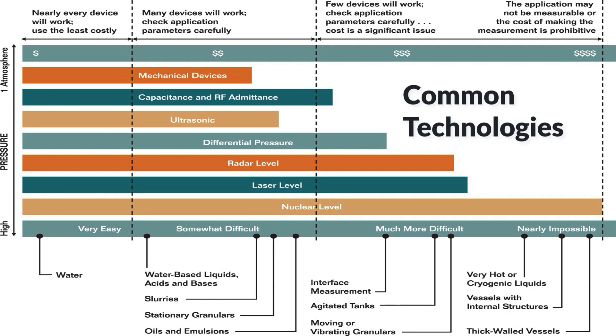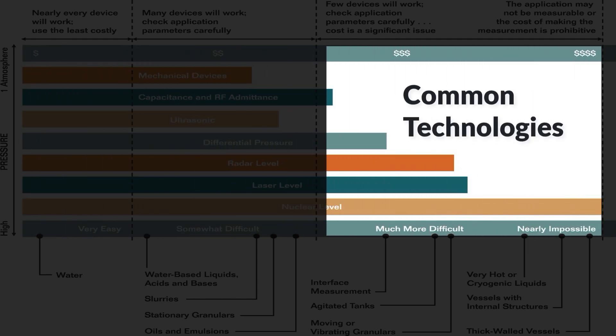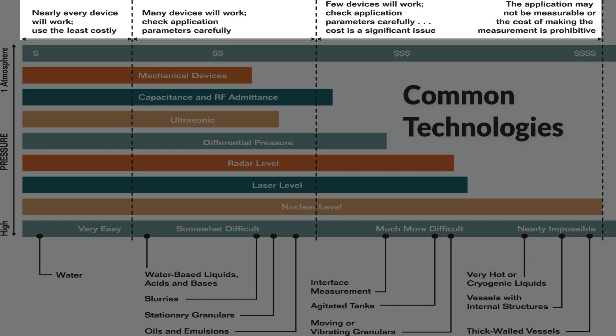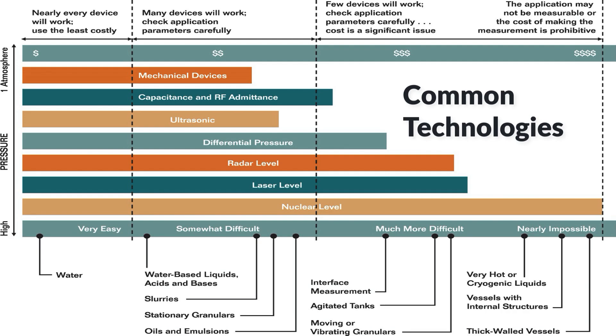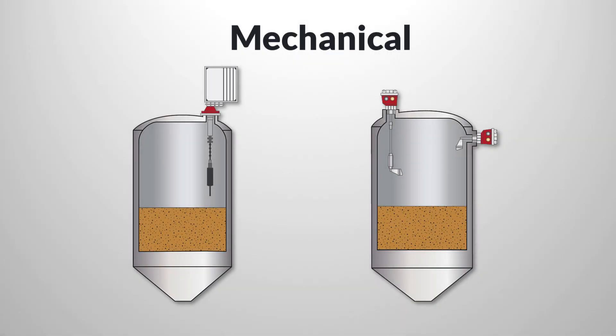Level instruments leverage a variety of physical operating principles. Here we show common technologies and applications arrayed along a continuum from relatively cheap and easy to expensive and difficult. Each of these technologies comes with its own advantages and limitations. We'll revisit this chart as we briefly describe the common technologies. We'll start with mechanical devices, which lie at the lower end of the cost scale and can handle many of the easier applications.